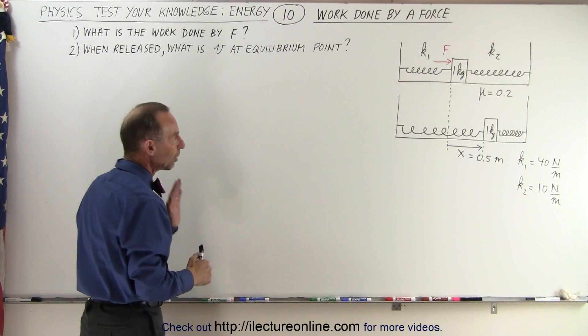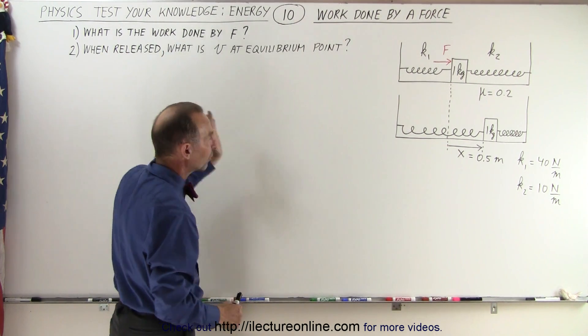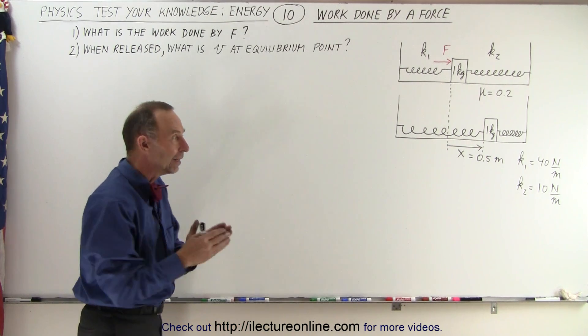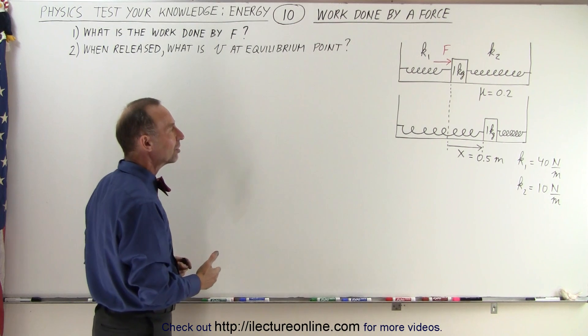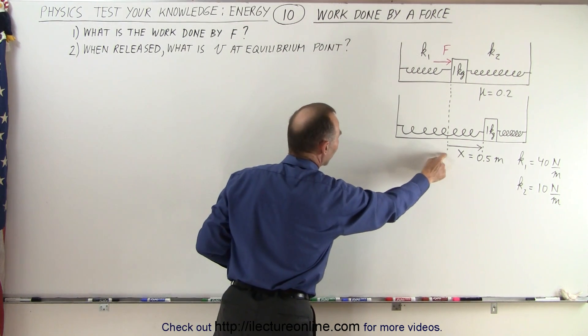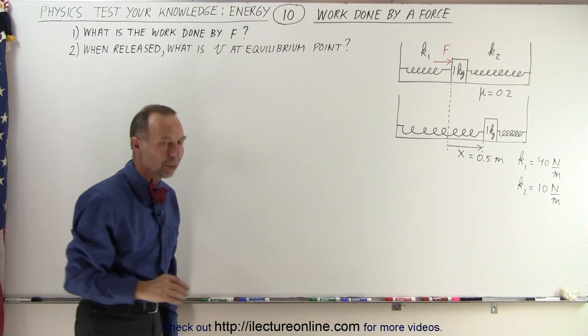First the block gets pushed 0.5 meters to the right and we're supposed to figure out how much work is done to accomplish that. Then the block is released, slides back in the other direction, and we're supposed to figure out what the velocity of the block will be by the time it reaches the equilibrium point.